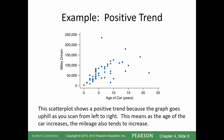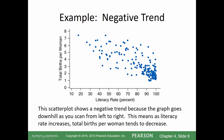Here's an example of positive trend — as the age of a car increases, the miles driven tends to increase. The trend is positive although there are some outliers. Not all the points are going to fit the data, but we're looking for the majority. The scatter plot shows a positive trend because the graph goes uphill as you scan from left to right.